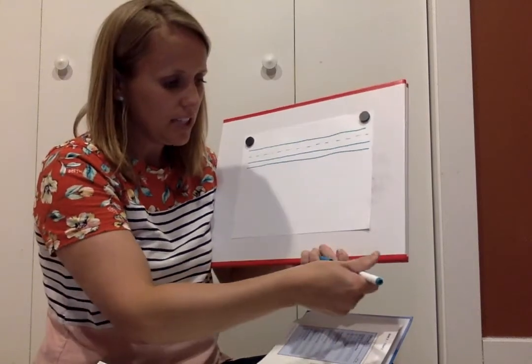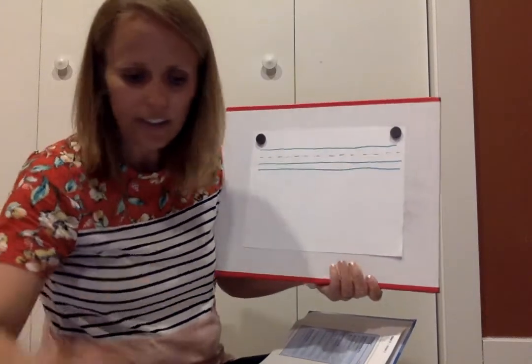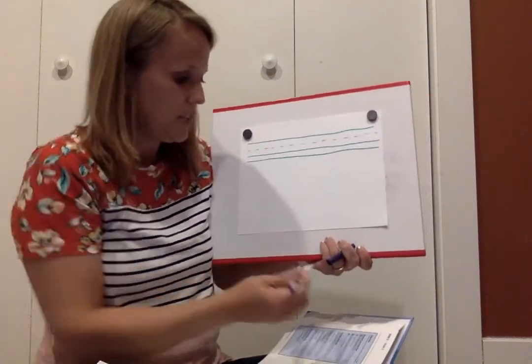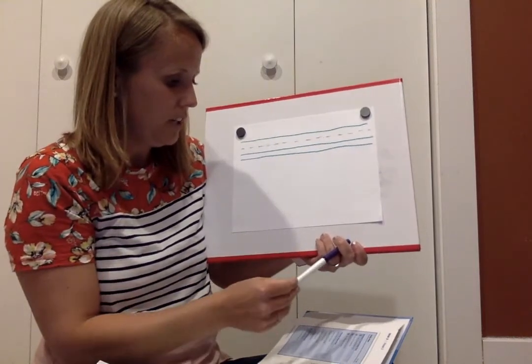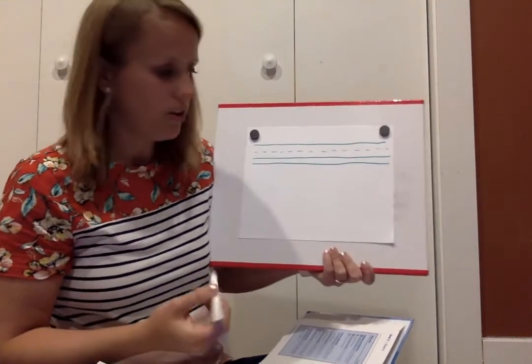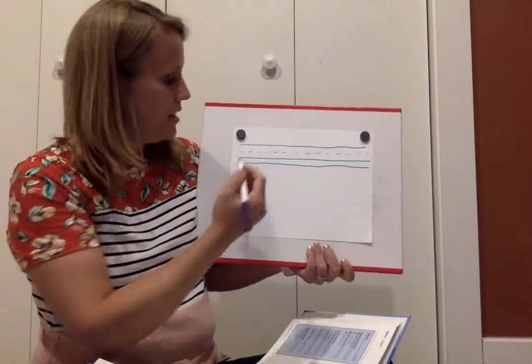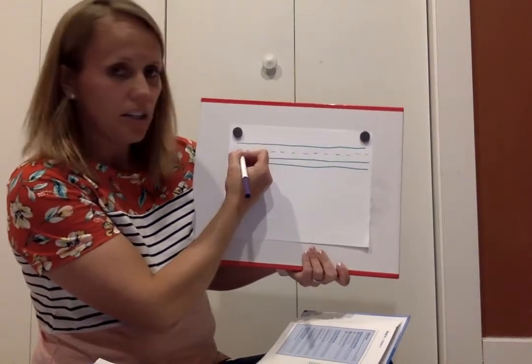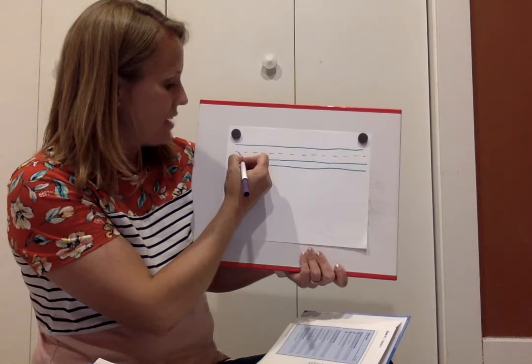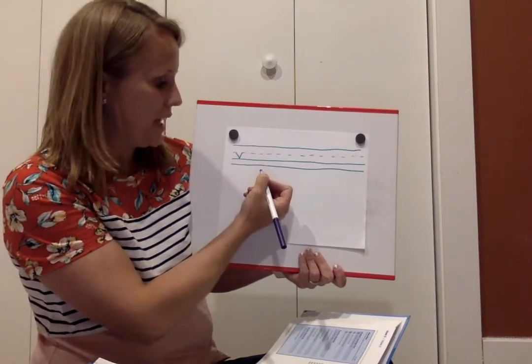And then I like to use a different color or a different utensil. I could use a pen or something now so I can see better. Okay, vet. V, you start on the plain line, slide to the grass line, slide up to the plain line.